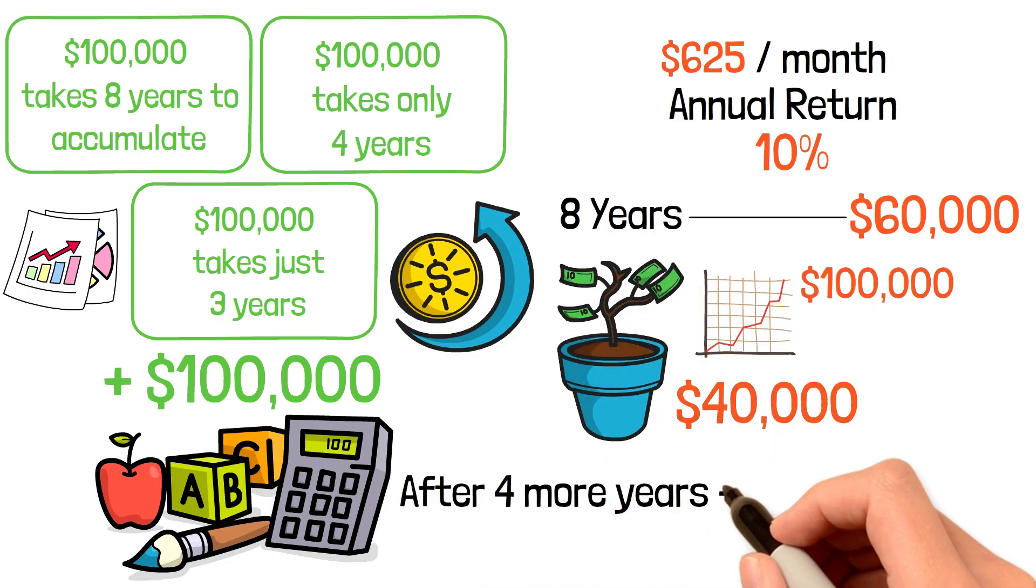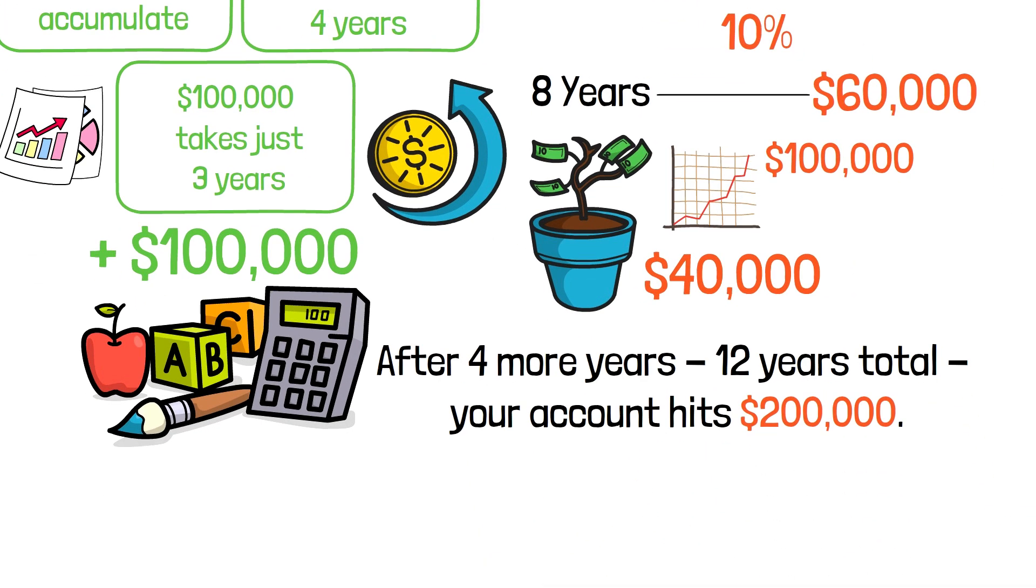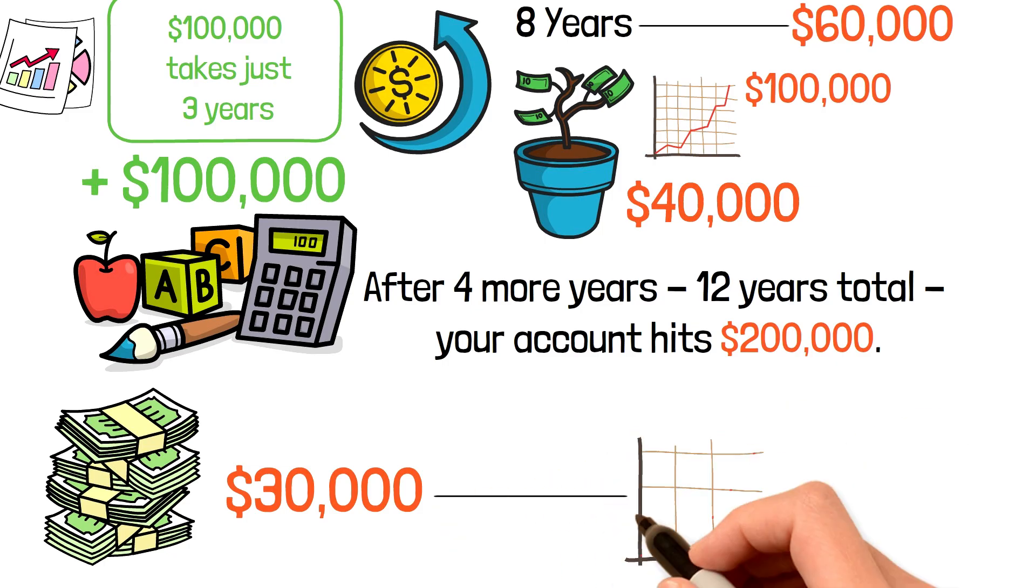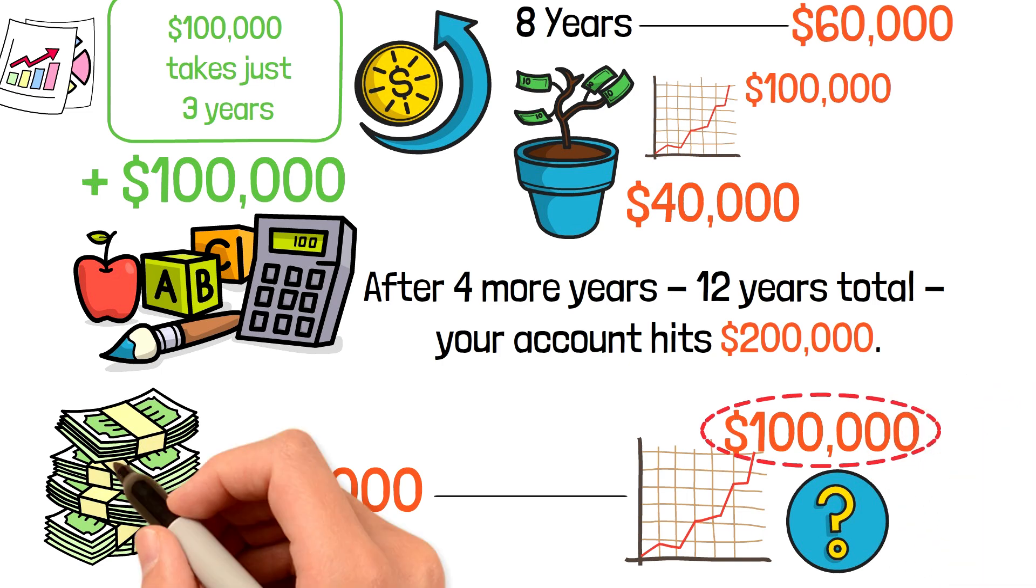After 4 more years, 12 years total, your account hits $200,000. You've only contributed an additional $30,000, but your account grew by $100,000. Why? Because now you have $100,000 working for you, generating returns that get reinvested and compound.